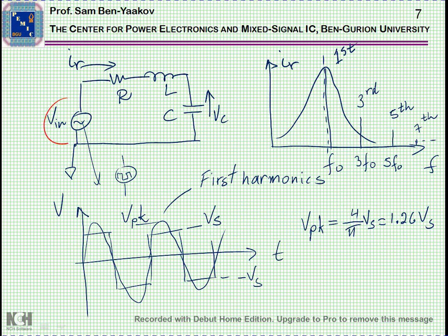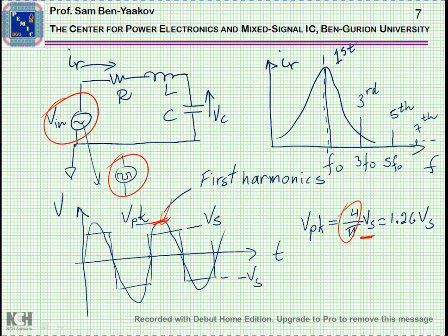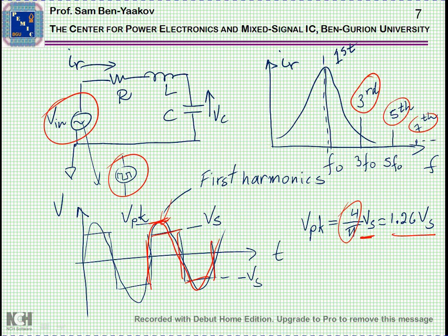If we replace the sinusoidal excitation with a square wave, we can look at the square wave as being composed of all the harmonics. The first harmonic, shown here, has a peak value of 4 over π times the square wave amplitude, which is about 1.26. A square wave will have higher harmonics — only odd harmonics: the third, fifth, seventh, etc. The higher the harmonic, the lower the magnitude; in fact, the third harmonic is one-third of the fundamental.